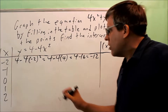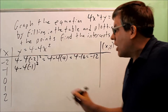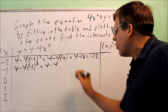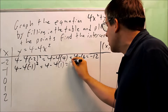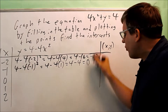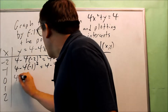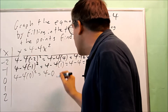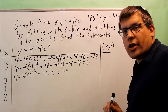Next I'm going to put in negative 1 in place of x. This is 4 times negative 1 times negative 1, which is 1. So I get 4 minus 4, which is equal to 0. So the next coordinate is negative 1, 0. Then for x equals 0: 4 minus 4 times 0 squared is 4 minus 0, because 0 times anything is 0, and you get 4. So 0, 4 is the next coordinate.